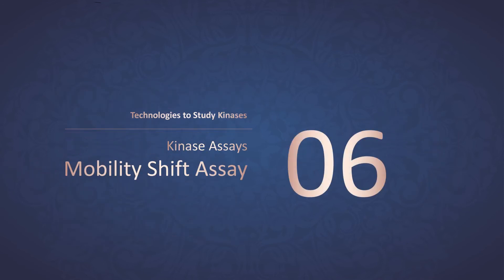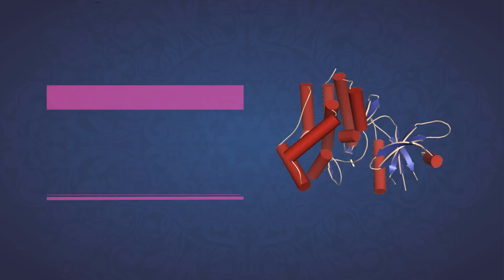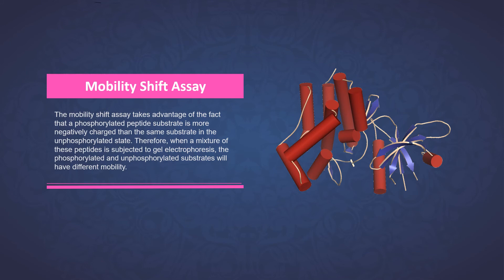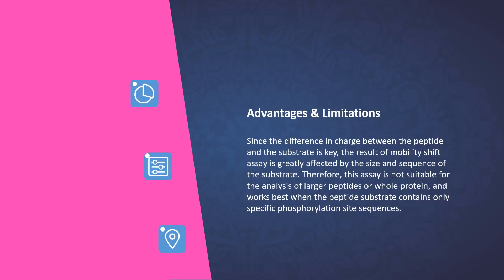Part 6: Mobility shift assay. The mobility shift assay takes advantage of the fact that a phosphorylated peptide substrate is more negatively charged than the same substrate in the unphosphorylated state. Therefore, when a mixture of these peptides is subjected to gel electrophoresis, the phosphorylated and unphosphorylated substrates will have different mobility. Since the difference in charge between the peptide and the substrate is key, the result of the mobility shift assay is greatly affected by the size and sequence of the substrate. Therefore, this assay is not suitable for the analysis of larger peptides or whole proteins, and works best when the peptide substrate contains only specific phosphorylation site sequences.